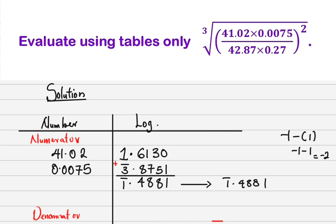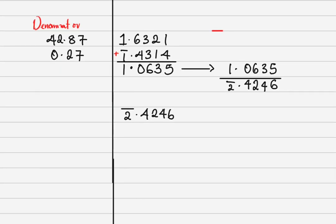The numerator/denominator expression has been squared. The rule for a power is: multiply the log by the power. So multiply bar 2.4246 by 2: 2×6=12, write 2 carry 1; 2×4=8+1=9; then 4; then 8; then 2×(minus 2)= minus 4, which is bar 4. Result: bar 4.8492.